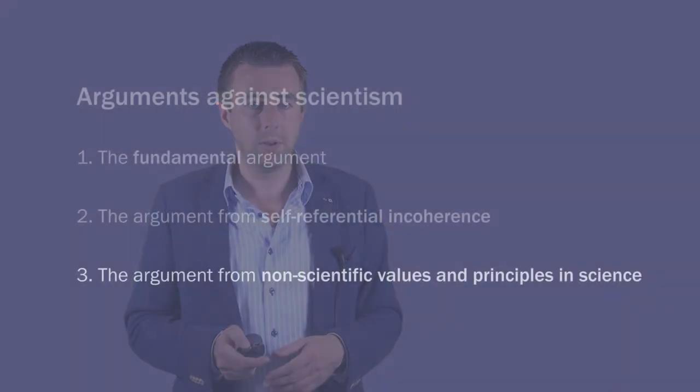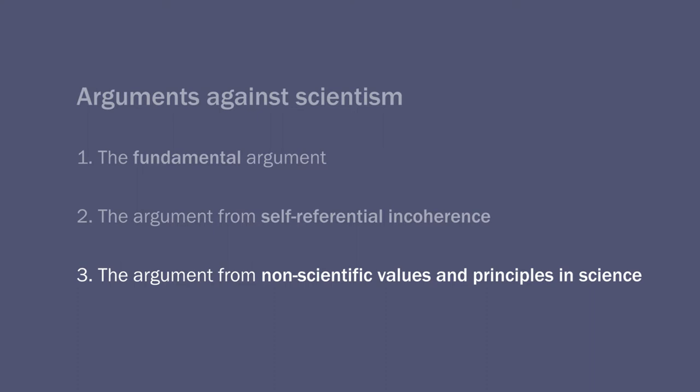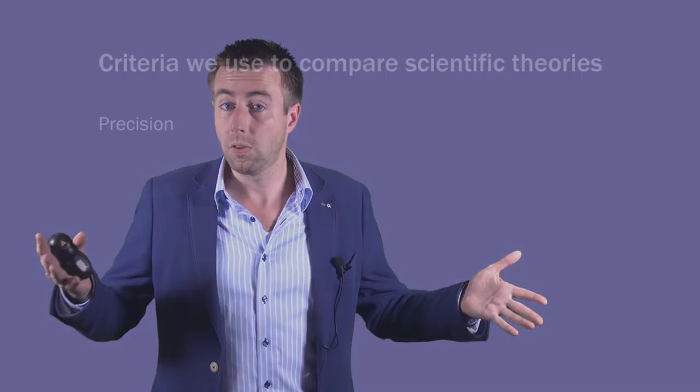And this brings me to the final argument that I would like to mention against scientism. I call it the argument from non-scientific values and principles in science. You will find certain aspects of this argument in the work of Michael Stenmark, the Swedish philosopher of science and epistemologist. He has written quite a bit on scientism. He's one of the first philosophers, I think, to write extensively about it. And the argument is basically this: If we do science, then we look at different scientific theories and we compare them with each other. But we do so on the basis of certain criteria.